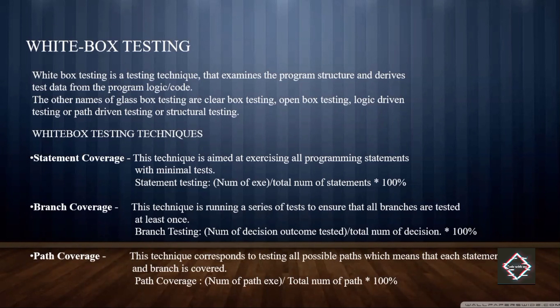Branch coverage involves running a series of tests to ensure all branches are tested at least once. It is calculated as: number of decision outcomes tested divided by total number of decisions, multiplied by 100. Path coverage corresponds to testing all possible paths, meaning each statement and branch is covered — calculated as: number of paths executed divided by total number of paths, multiplied by 100.